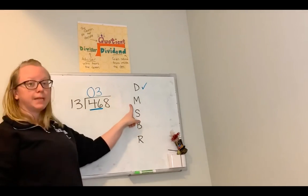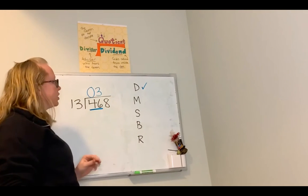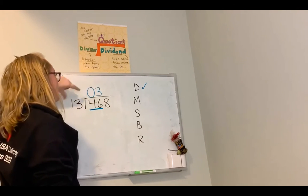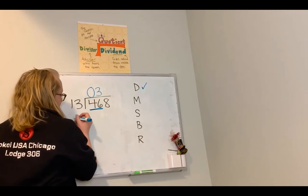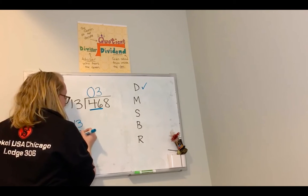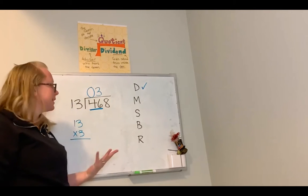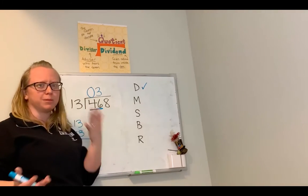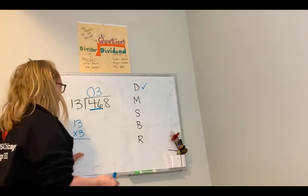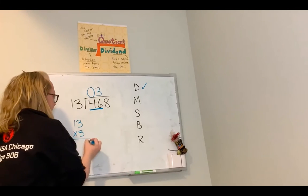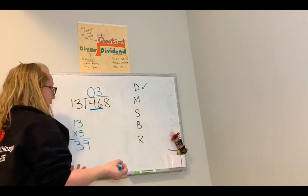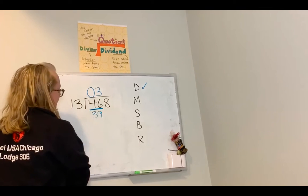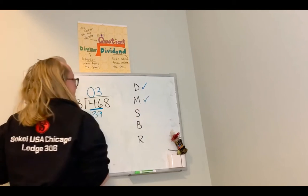I move down to multiplication: I multiply whatever I put in my quotient times my divisor, which is 13 times 3. If I don't know my 13 multiplication tables by heart, I can write a note on the side of my paper and figure it out. 3 times 13 is 39. I can erase that note and check off multiplication.